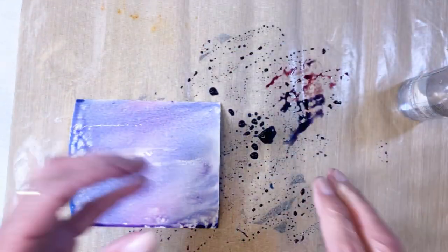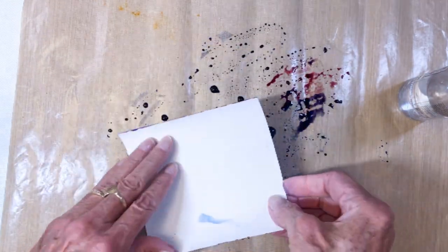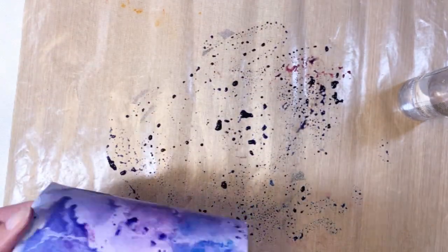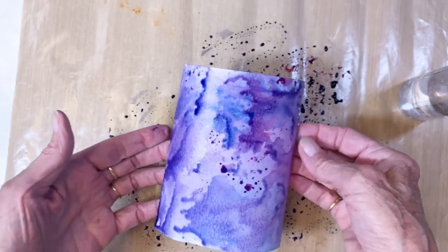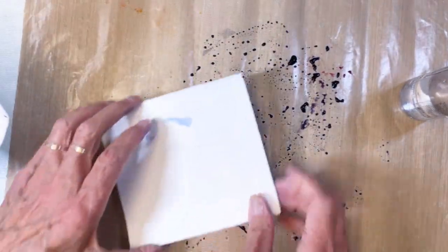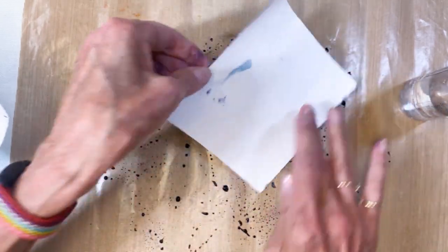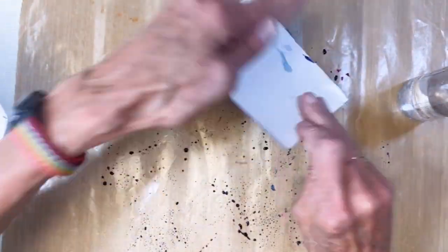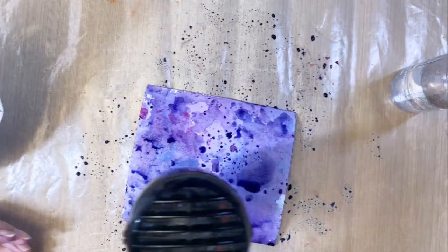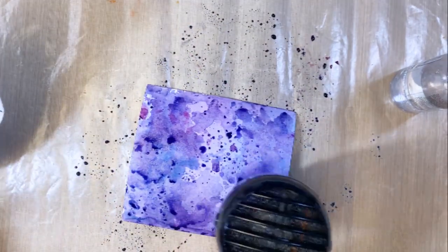That's the cool thing about Distress Inks is that if you're not happy with it, you can add more water, you can splatter, you can keep dipping and drying, which is what I did to create this very deep, dark background. Here we go again, just more dipping and drying. Look how nice and dark that background is turning out. We're going to heat dry it here.